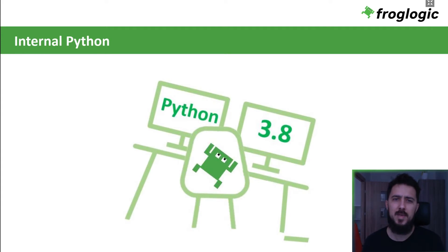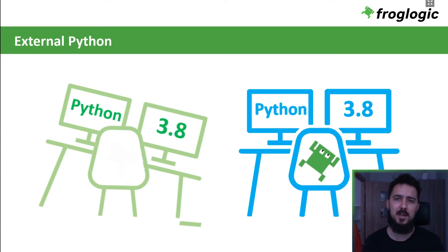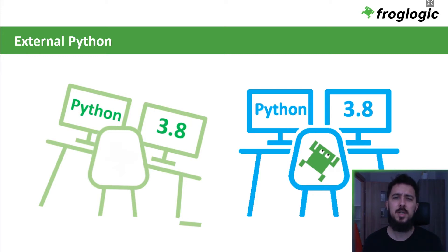All of that sounds great, but in some cases you may hit the wall when the built-in Python interpreter is used. Due to various technical reasons, Squish developers had to trim it a bit, and because of that some third-party modules cannot be easily installed and used. Fortunately, my clever colleagues thought about such a case and gave us an option to use the external Python interpreter — like the one you can download and install from the official Python website. To avoid complications, I would suggest reaching for this solution at the moment you want to use any third-party Python package.